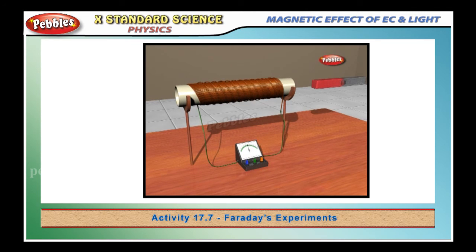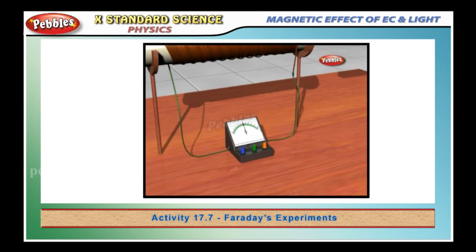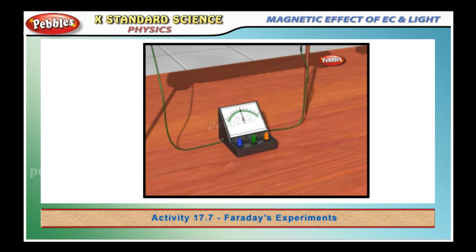If the south pole of the magnet is brought toward end B of the coil, the deflection in the galvanometer would be just opposite to the previous case. When the coil and the magnet are both stationary, there is no deflection in the galvanometer.